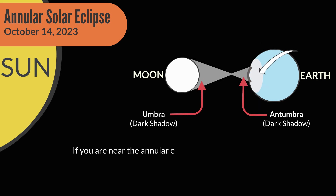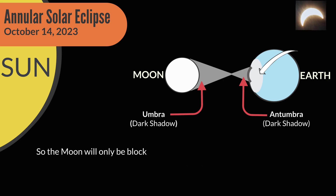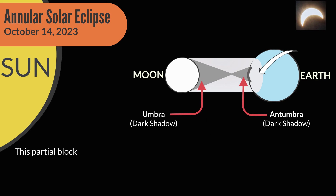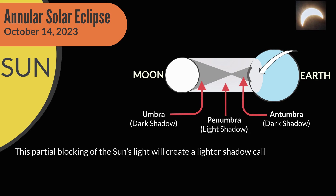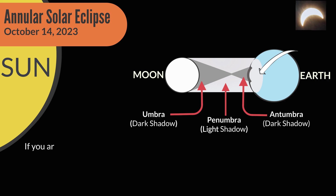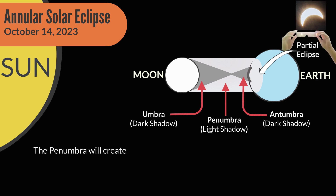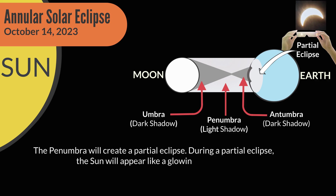If you are near the Annular Eclipse path but not on it, the Moon will not be perfectly lined up with the Sun. So the Moon will only be blocking part of the Sun, but it will be off-center. This partial blocking of the Sun's light will create a lighter shadow called the Penumbra. The Penumbra is created when the Moon only blocks part of the Sun from view. If you are near but not on the Annular Eclipse path, you will be in the Penumbra, or lighter shadow. The Penumbra will create a partial eclipse.